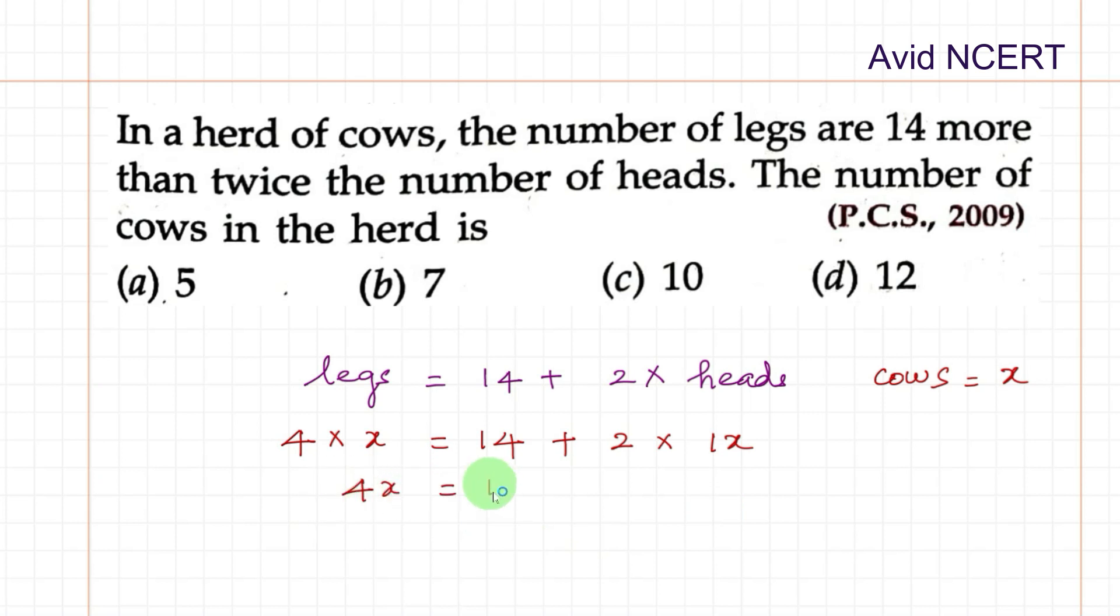So 4x equals 14 plus 2x. Taking 2x to the other side, 4x minus 2x equals 14. Therefore 2x equals 14, so x equals 7.